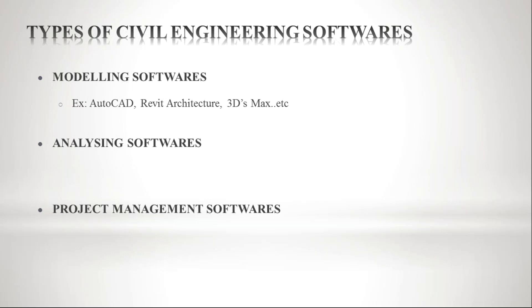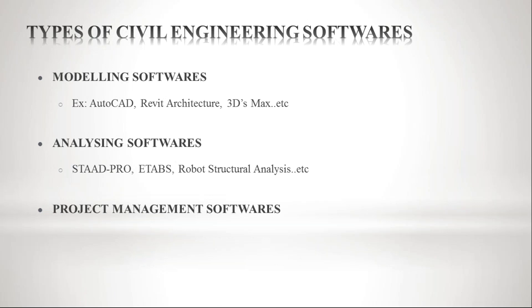Next is analyzing software. The name itself defines analysis of the structure — these are tools used for the analysis of a structure. By using these tools, we are going to analyze our structure and test our building whether it will withstand the applied loads or not. Software like STAAD.Pro, ETABS, and Robot Structural Analysis are basic softwares under this analyzing category.